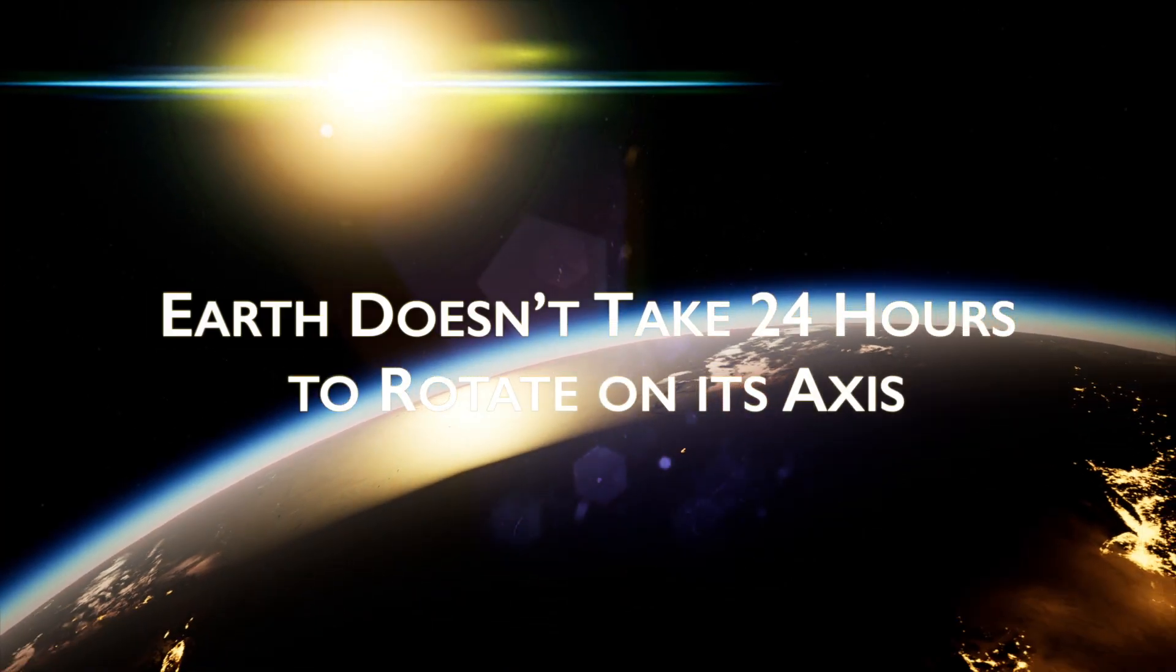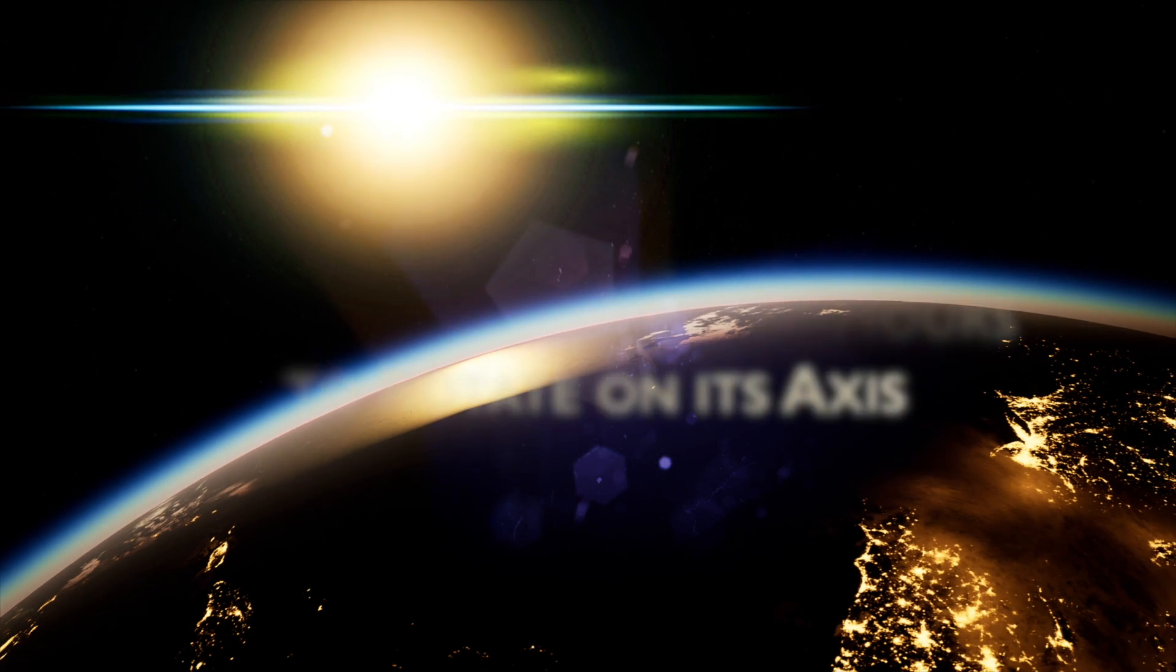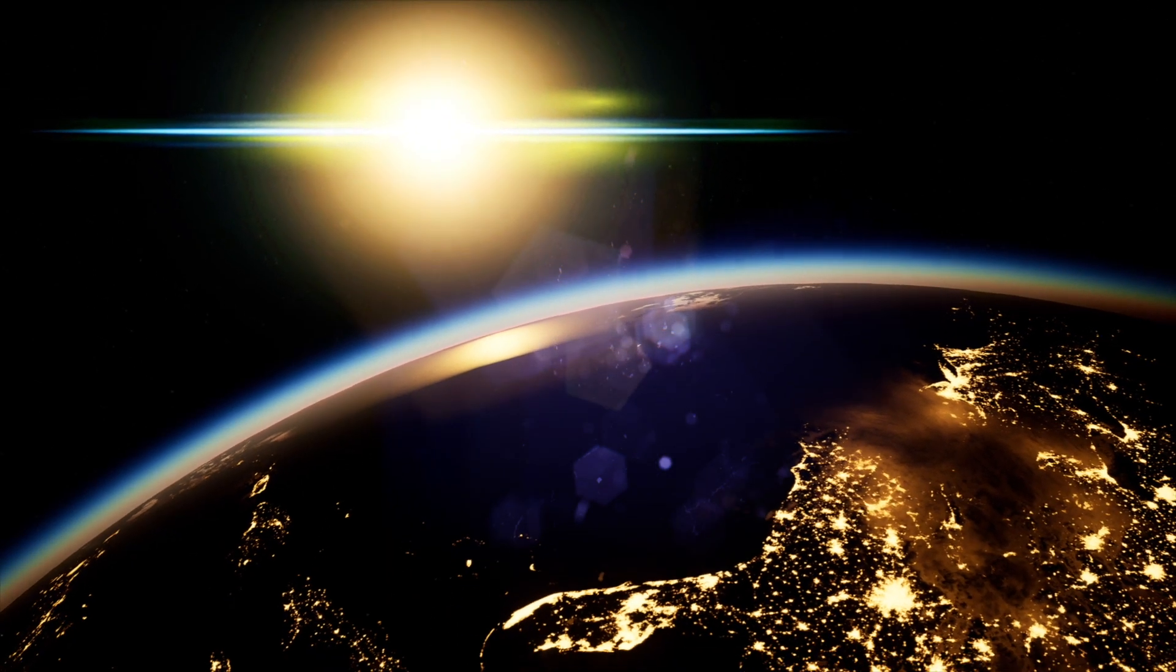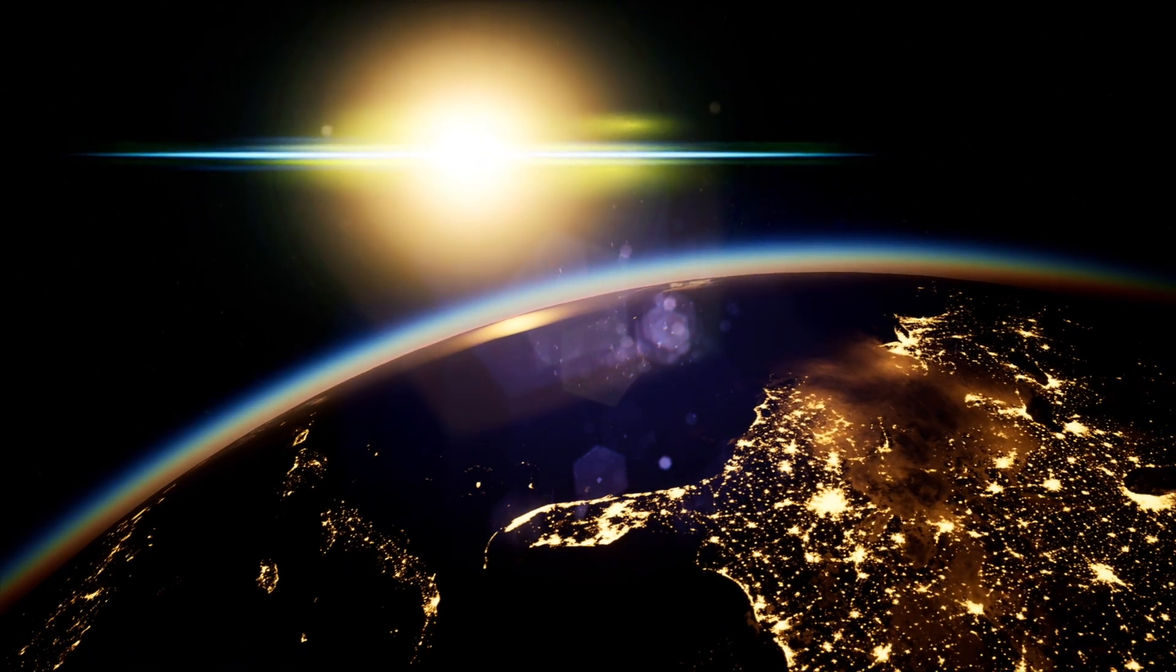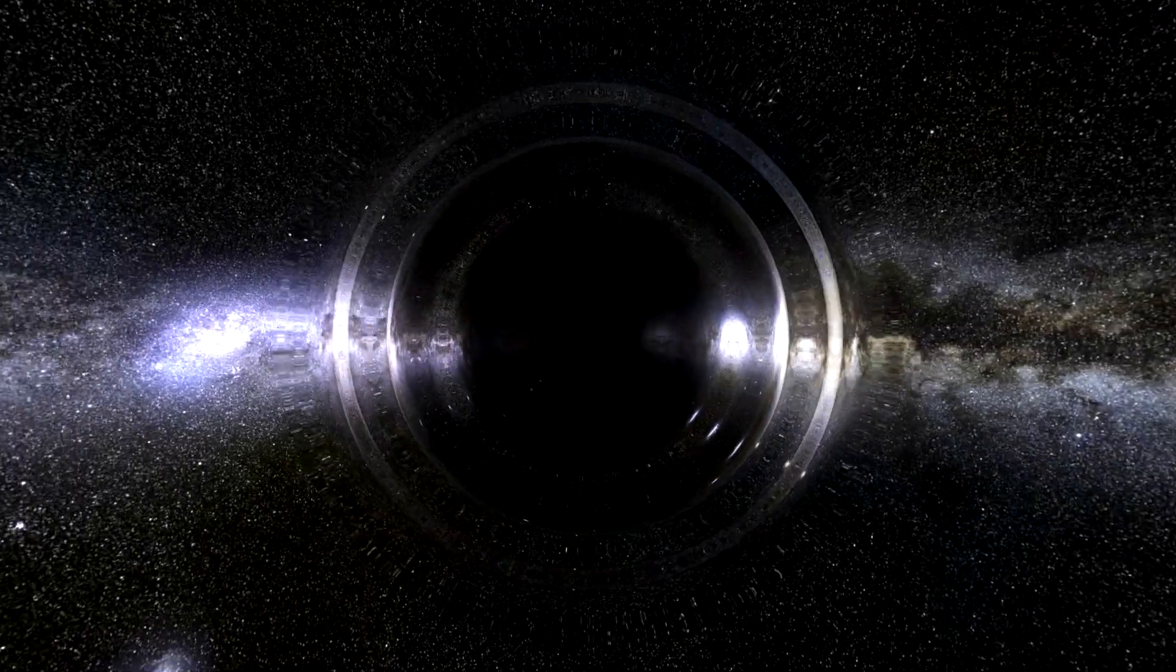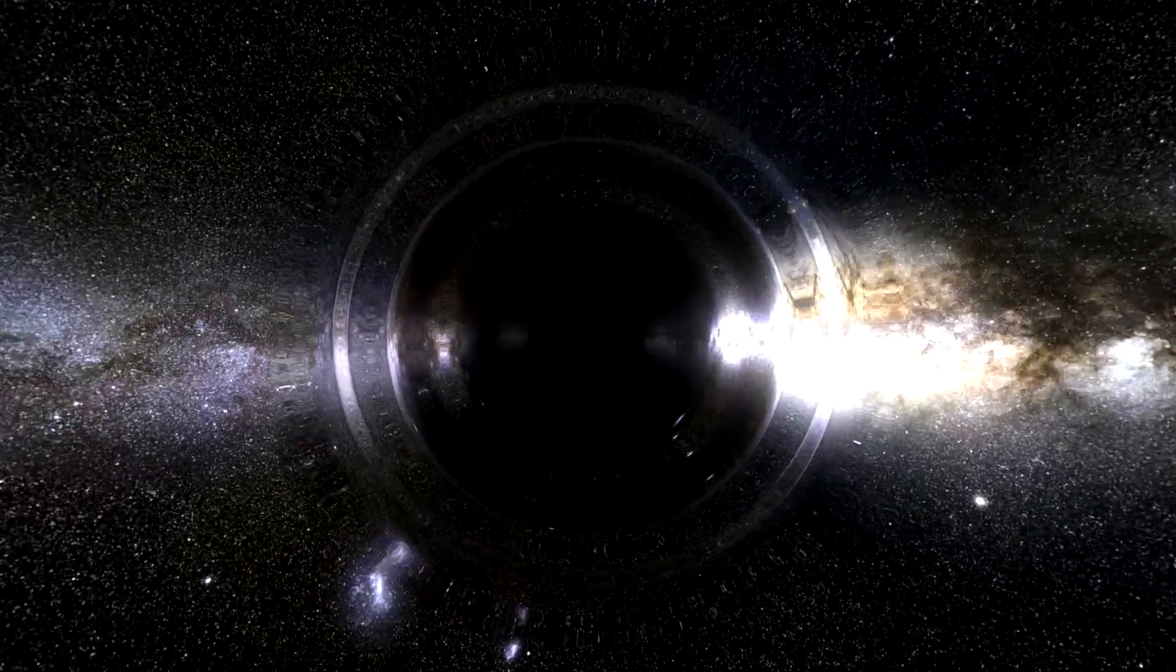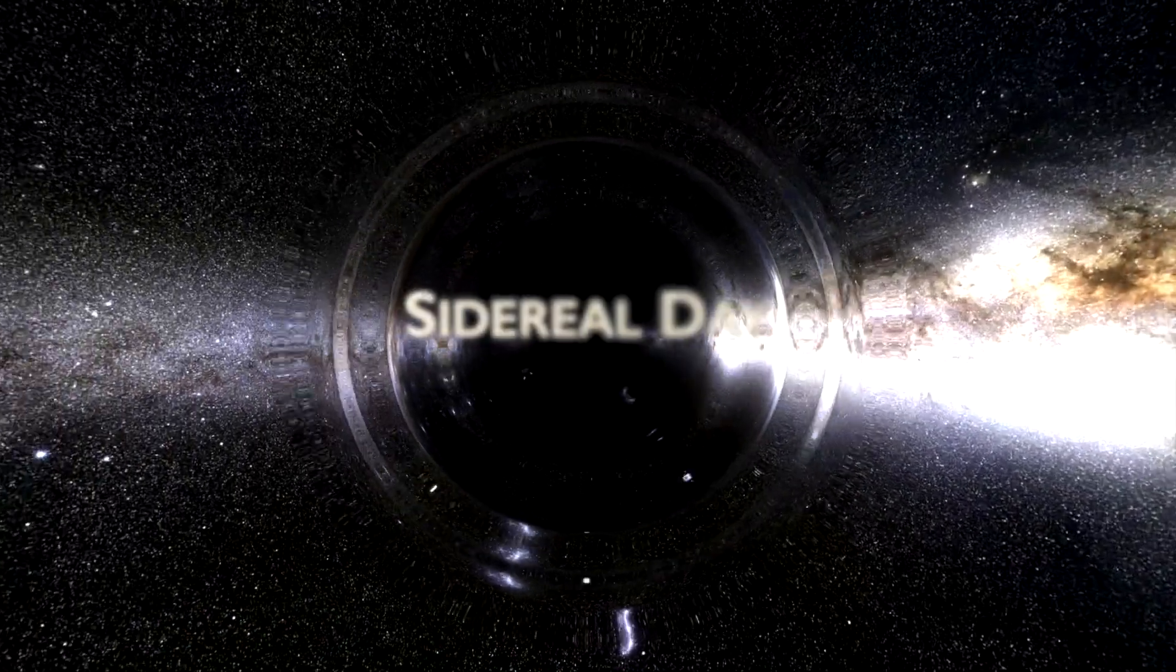Earth doesn't take 24 hours to rotate on its axis. It actually takes 23 hours, 56 minutes and 4 seconds for the Earth to rotate once completely on its axis, which astronomers refer to as a sidereal day.